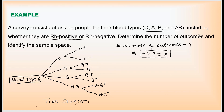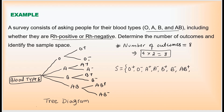After finding the number of outcomes, we identify the sample space. S = {O positive, O negative, A positive, A negative, B positive, B negative, AB positive, AB negative}. This is the sample space of blood types. When you ask for a blood type, you will get one of these answers — these are all the possibilities.